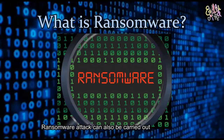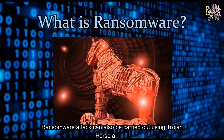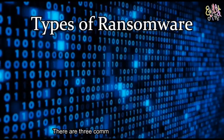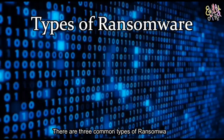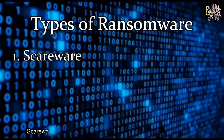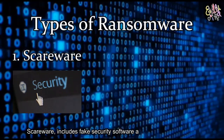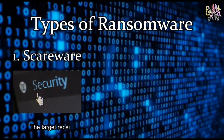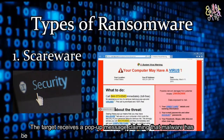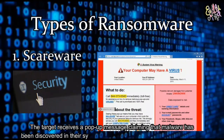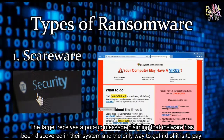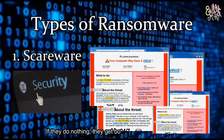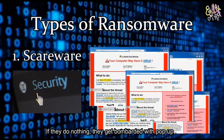Ransomware attacks can also be carried out using a Trojan horse attack. There are three common types of ransomware. The first is Scareware, which includes fake security software and tech support scams. The target receives a pop-up message claiming that malware has been discovered in their system and the only way to get rid of it is to pay. If they do nothing, they get bombarded with pop-ups.